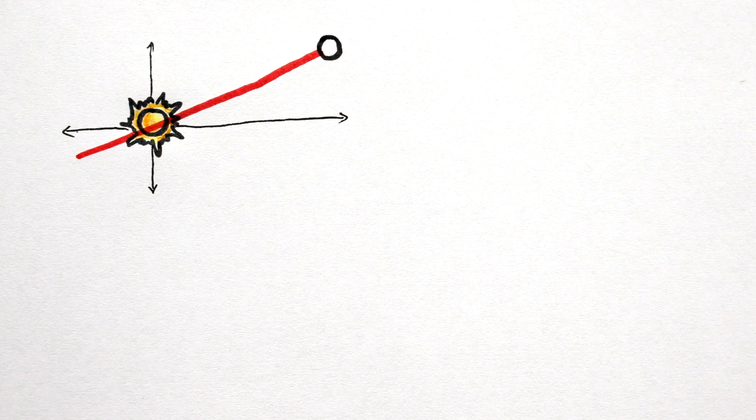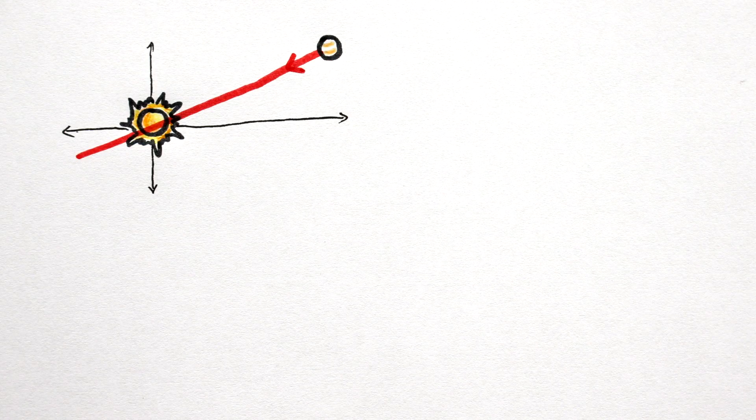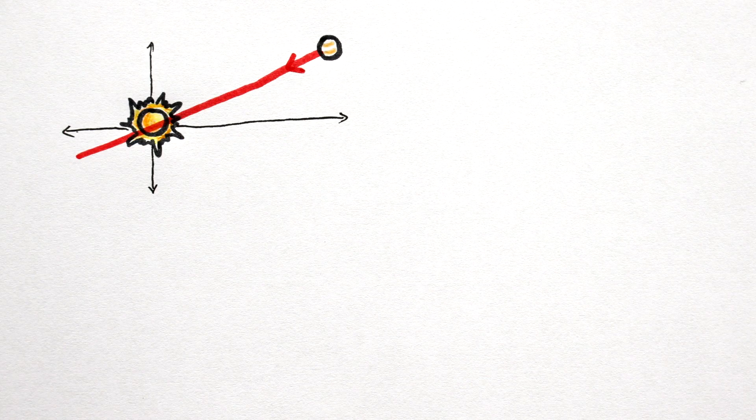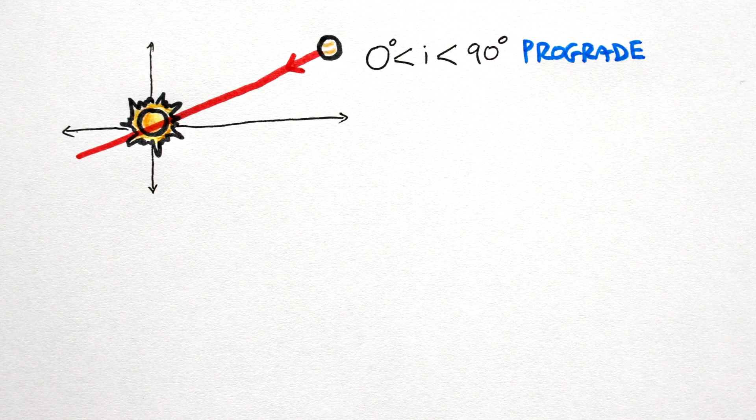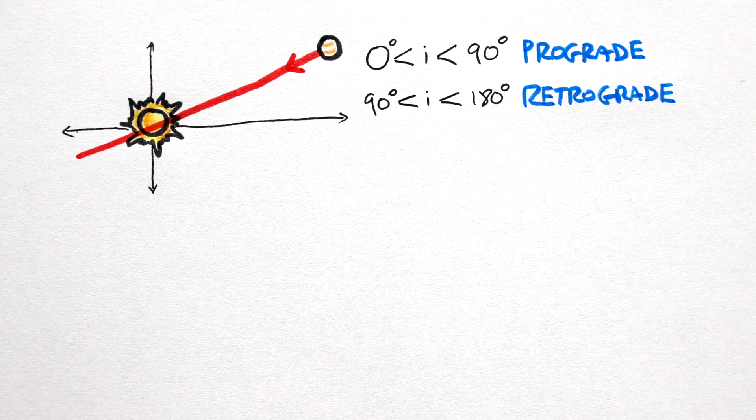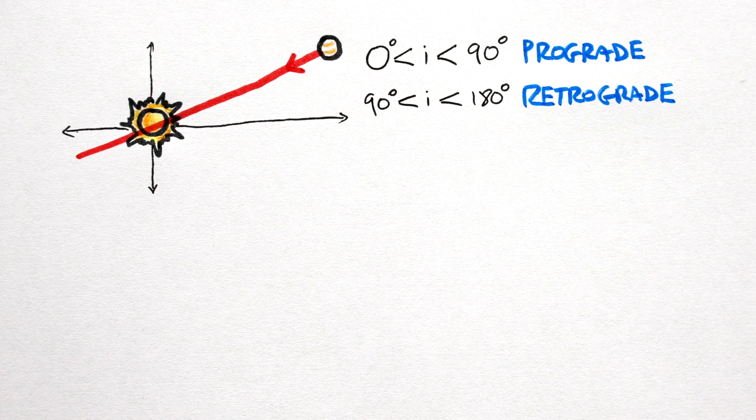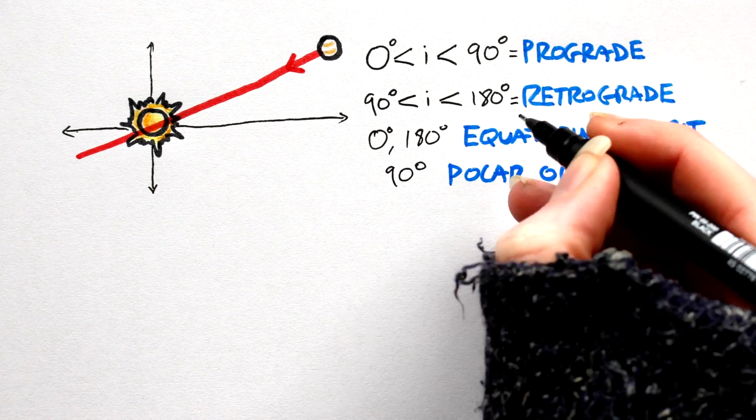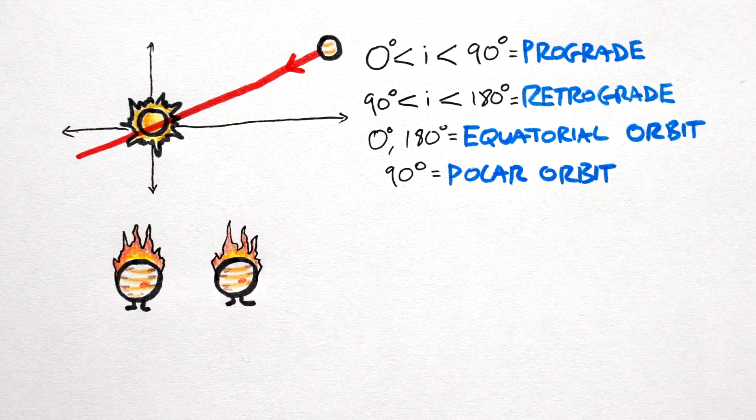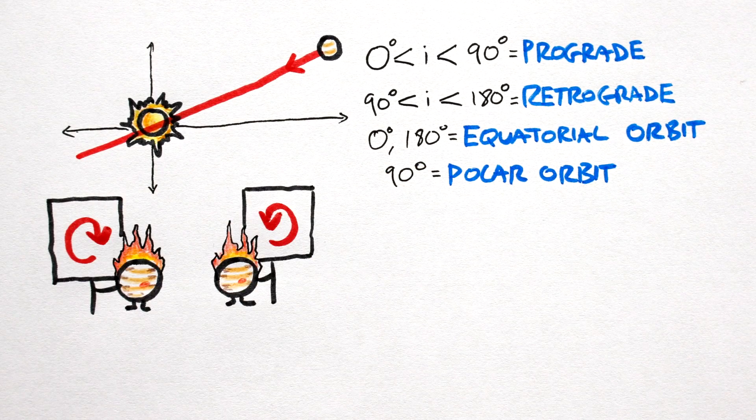Inclination. So orbital inclination is a measure of how tilted an orbit is. Most orbits are prograde, that is, they orbit in the same direction as their star. Prograde orbits lie between 0 and 90 degrees. Between 90 and 180 degrees orbits become retrograde, i.e., they orbit in the opposite direction to their star. Most planets orbit in a prograde fashion, but a unique quirk of hot Jupiters is that half orbit prograde, the other half retrograde.